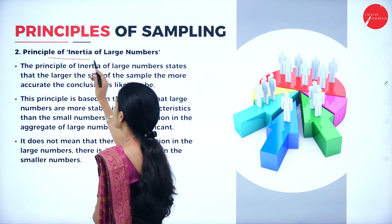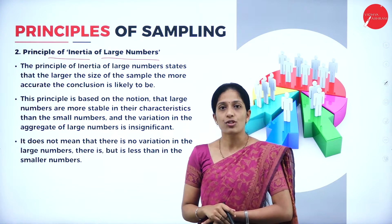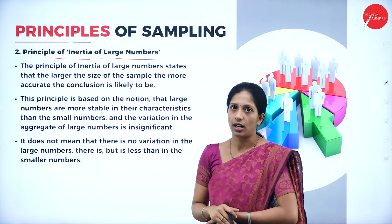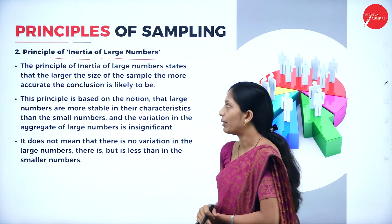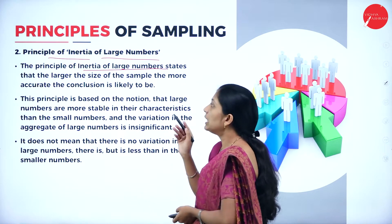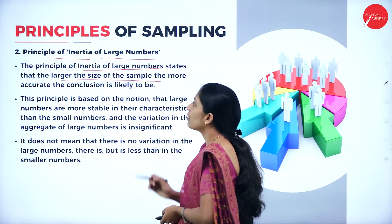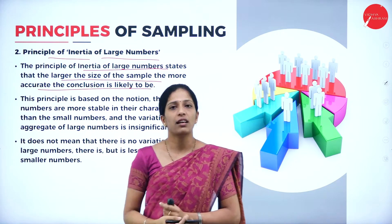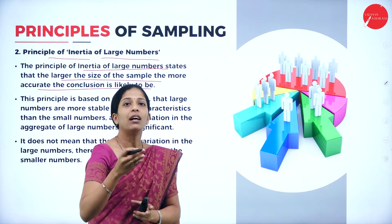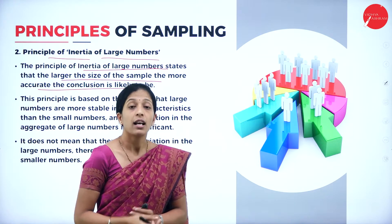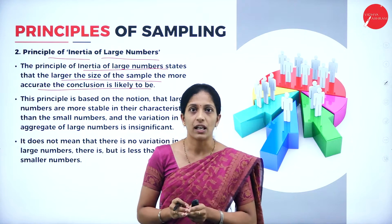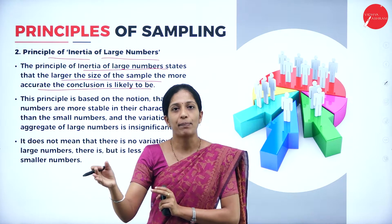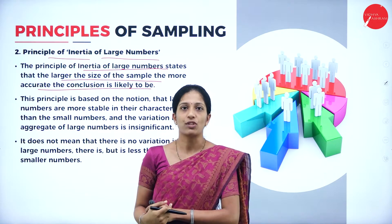Now coming to the second principle: the principle of inertia of large numbers. This is also one of the important principles of sampling. It states that the larger the size of the sample, the more accurate the conclusion is likely to be. Instead of collecting information from 10 people, if we collect from 100 people, the information from 100 is more accurate. More the number of sample size, more the accuracy of the information collected.